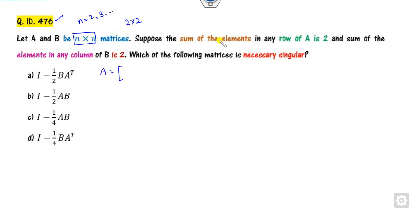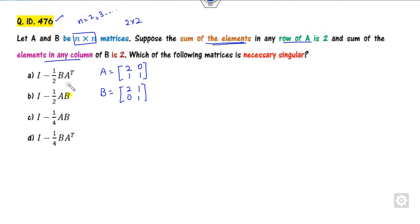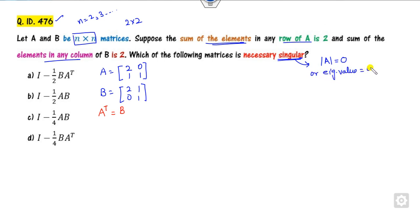Let A be a matrix where the sum of elements in each row is 2, and B is [2,0;1,1] because the sum of each column is 2. Looking at the options, they involve A transpose. Here, A transpose equals B. The target is to prove whether a given matrix is singular or not — either by showing the determinant is 0, or that one eigenvalue is 0.